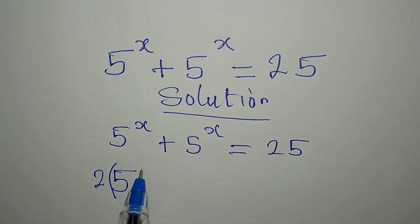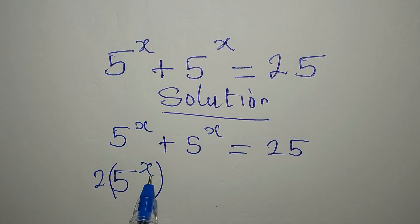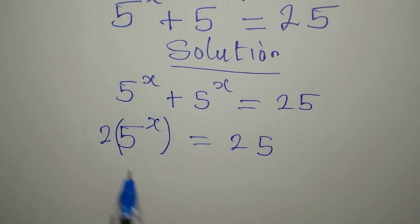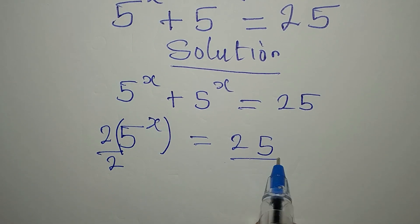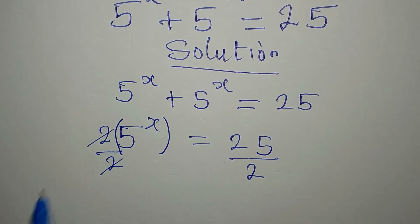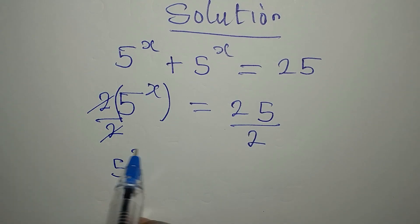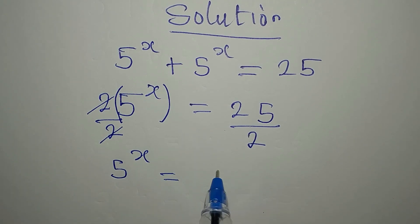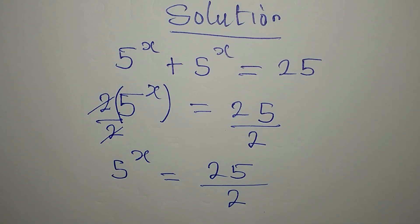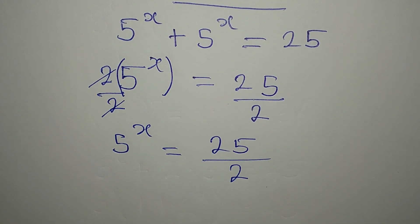Two multiplied by five to the power of x, or two of five to the power of x. So this is equal to 25. Let's make five to the power of x the subject, so we divide both sides by two. Now five to the power of x is equal to 25 divided by 2.